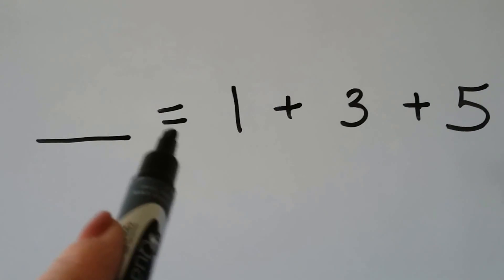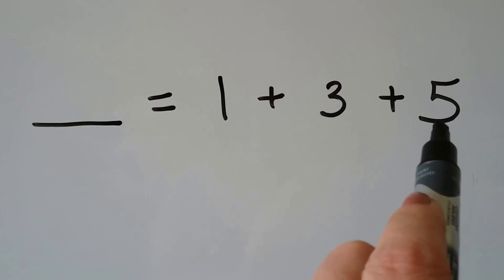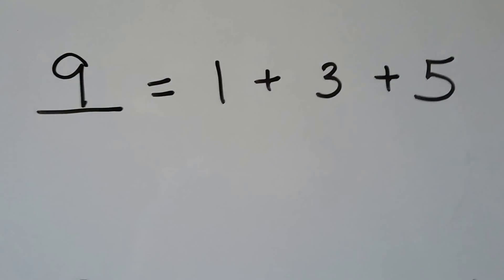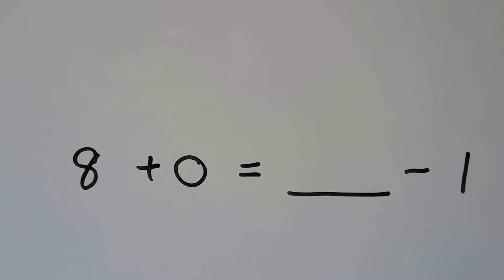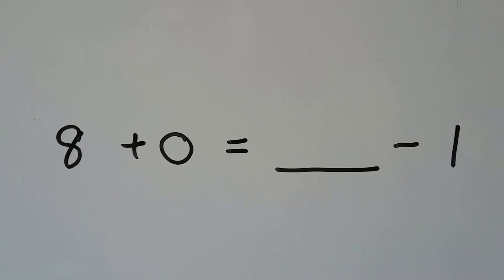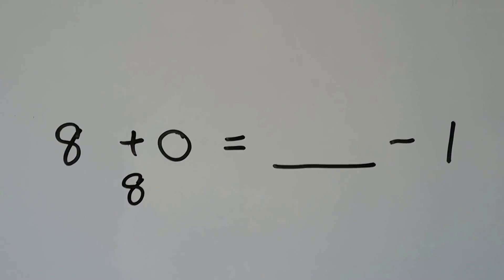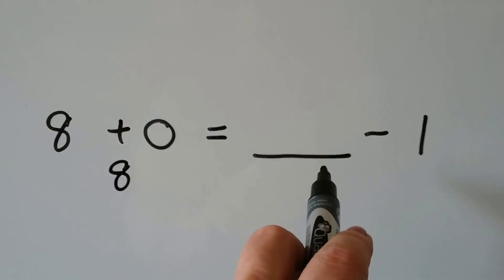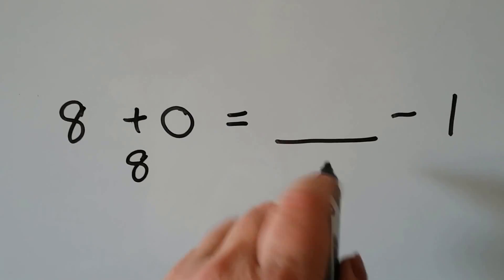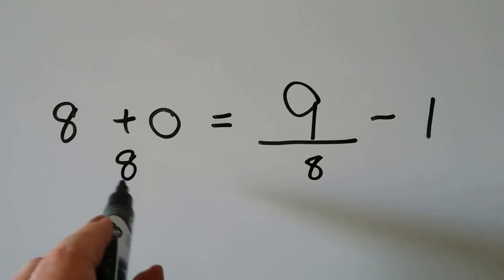An unknown number is equal to 1 plus 3 plus 5. Let's find out what 1 plus 3 plus 5 is. We start with 5, the greatest addend, and count on 3: 5, 6, 7, 8, then add 1 more — that's 9. So 9 is equal to 1 plus 3 plus 5. 8 plus 0 is equal to an unknown number minus 1. What is 8 plus 0? We're adding none, so it stays 8. What number minus 1 would make an 8? It would be 1 more than 8, so it would be 9. 9 take away 1 gives us 8, so we'd have 8 on both sides.